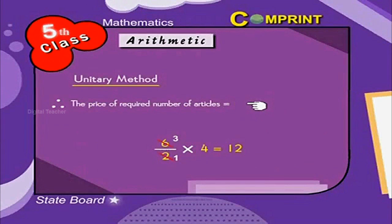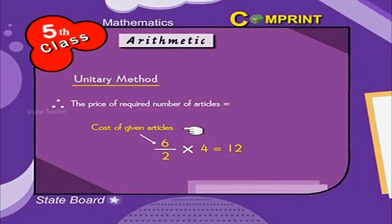Therefore, the price of required number of articles is equal to cost of given articles by given number of articles into required number of articles.